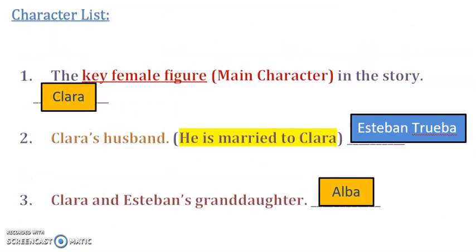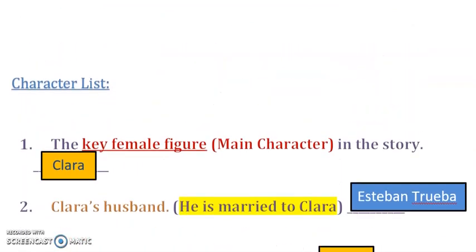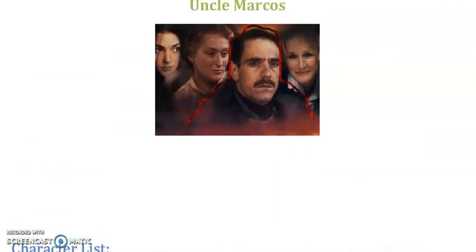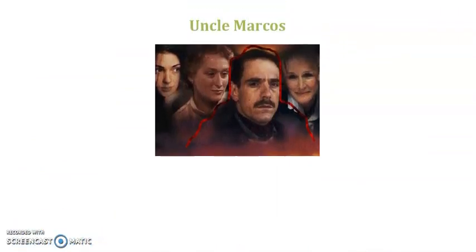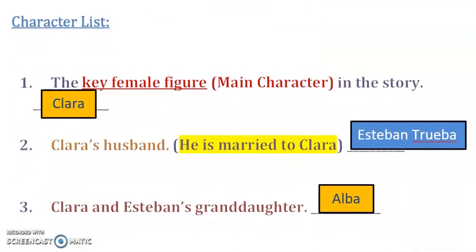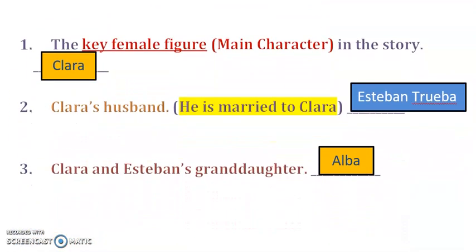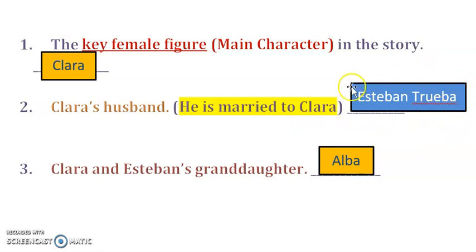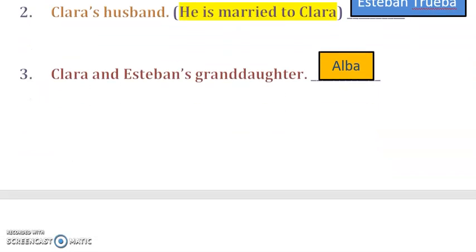Let's revise what we answered. This is the Uncle Marcos story and these are the characters. Number one: the key female figure is Clara. Number two: Clara's husband — he is married to Clara, and he is Esteban Truba.